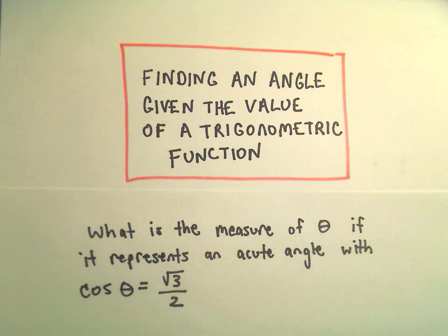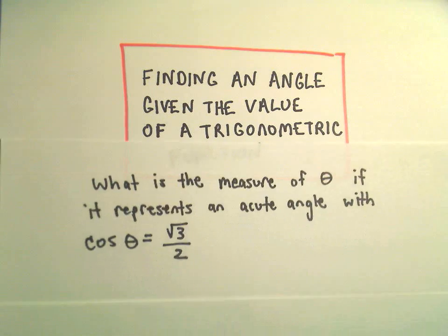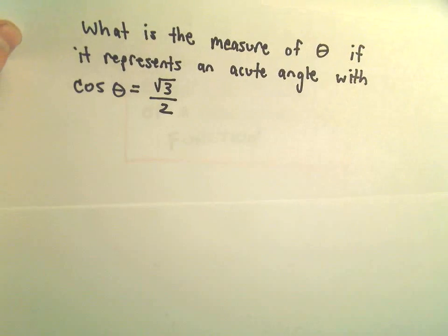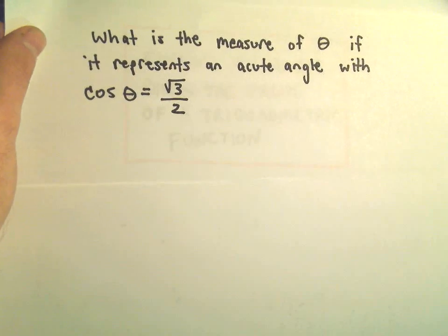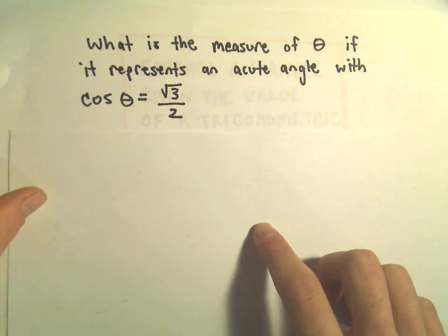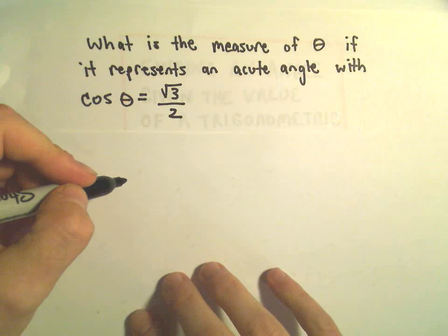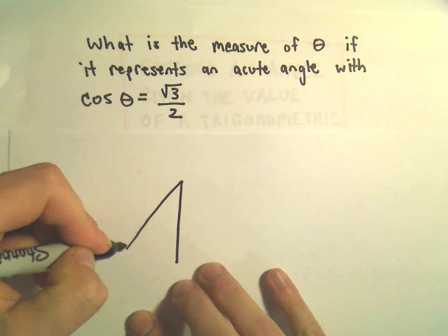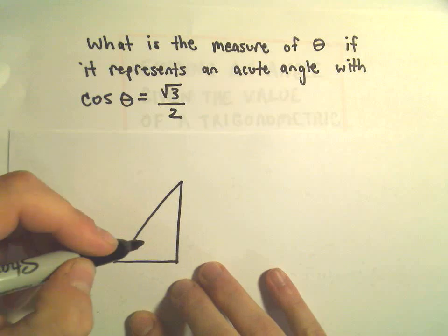Alright, in this video we're going to do an example of finding an angle, the measure of an angle, if we know a little more information. So, in this case, suppose we know that the cosine of theta is equal to square root of 3 over 2. We want to find the angle, what the measure is for our angle here, theta.